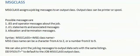MSG CLASS is nothing but the message class. It assigns a job log message to an output class. Output class can be spool or printer. The possible messages that are printed are JES and operating messages about the job, JCS statements and associated messages, and allocation and termination messages.